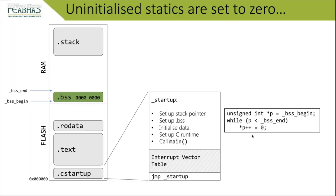This zeroing process takes time, and the time to reach main is important in many embedded systems — it's when the user application can start running. The more global objects you have, especially large zero-initialized arrays, the longer it will take. A large array must be fully zeroed before main, adding boot delay.